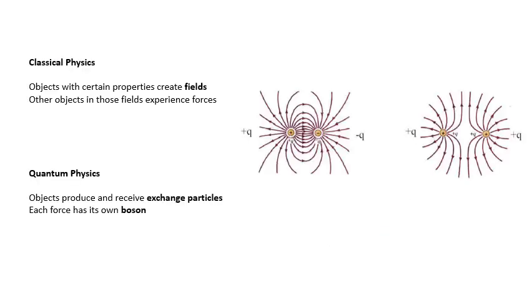In classical physics, how do these forces work? A positive charge creates a field surrounding it, and if there's another object in that field, it is subject to a force. For example, a positive charge creates an electric field, and another positive or negative charge in that field will feel the force. That is action at a distance — that is classical physics.